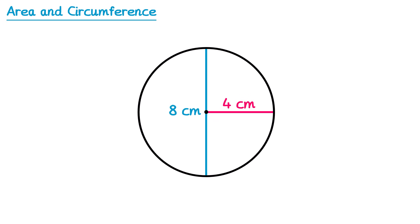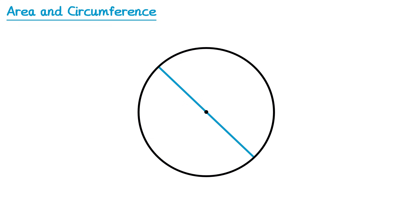The radius is also half of the diameter. For example, if the diameter of this circle was 20cm, its radius would be 10cm.